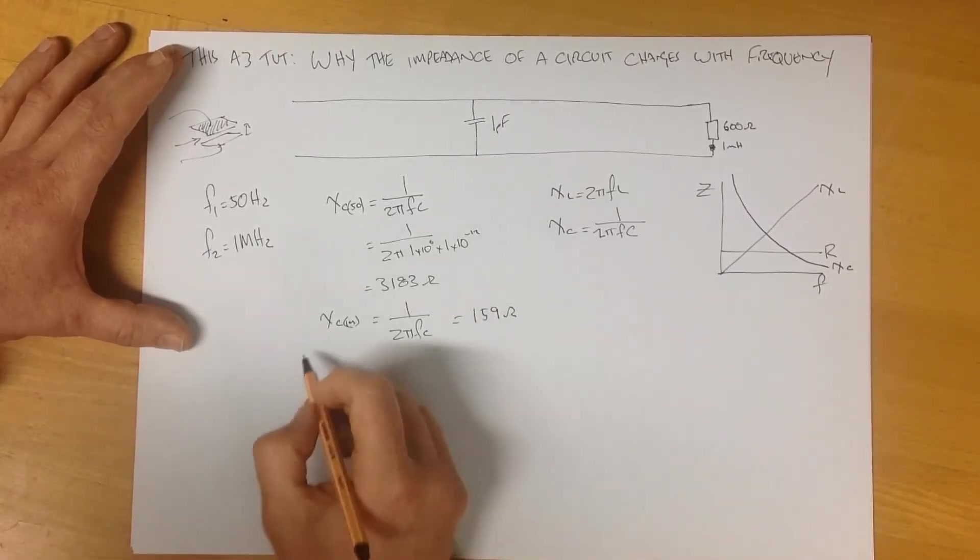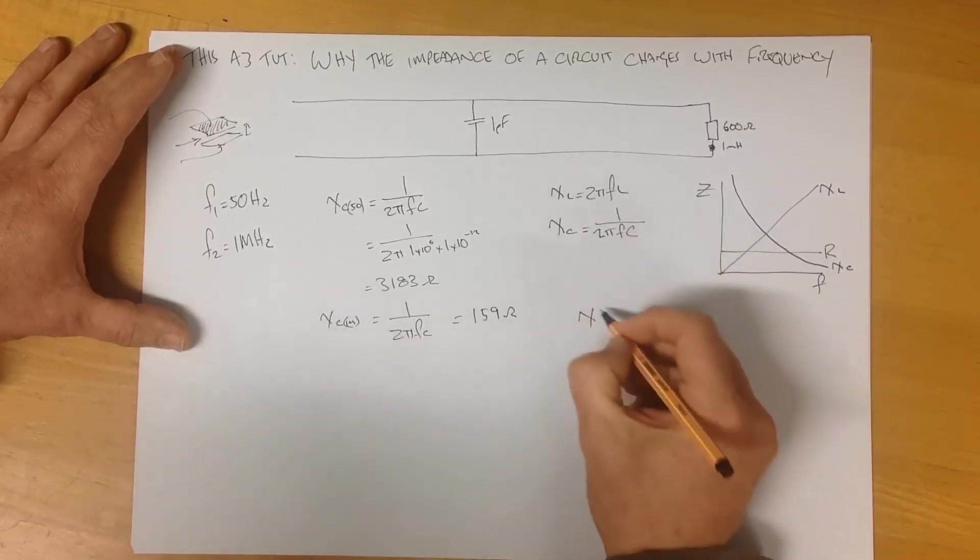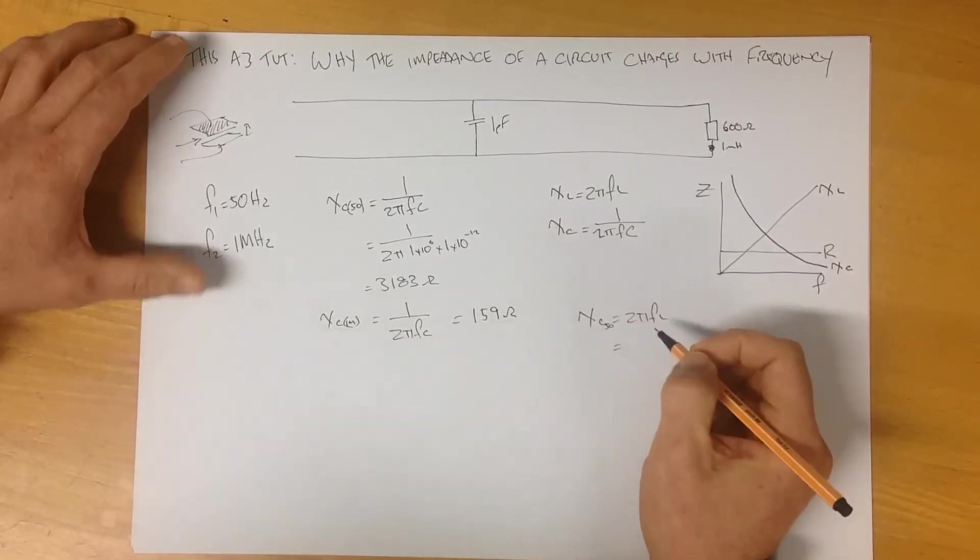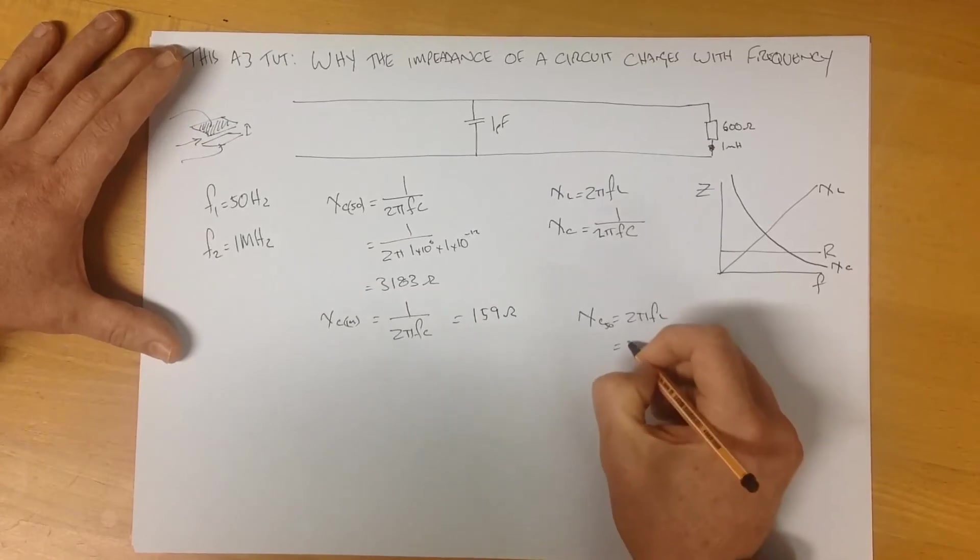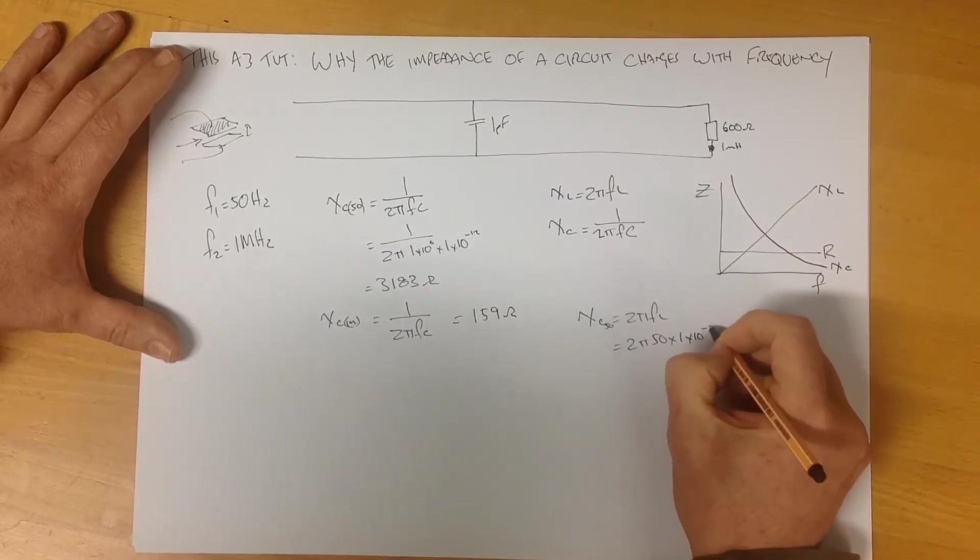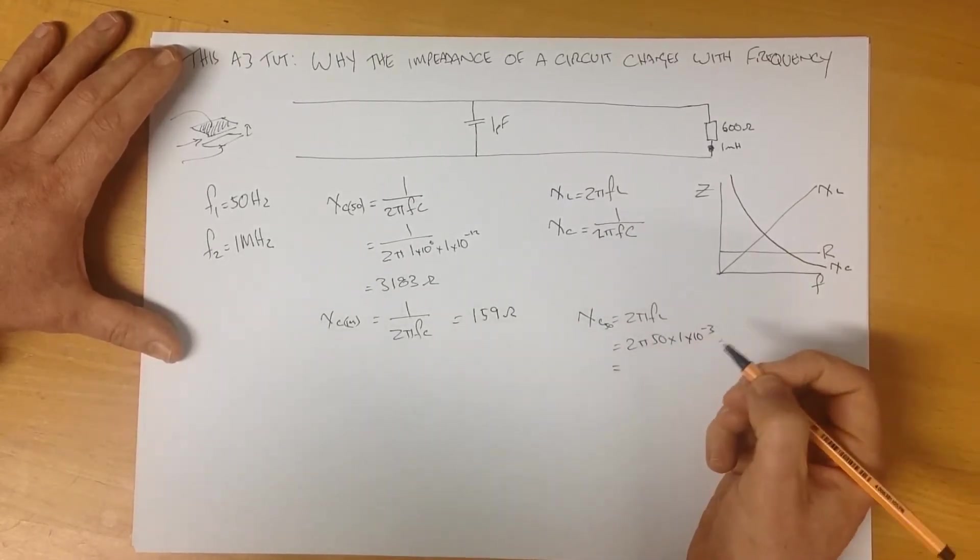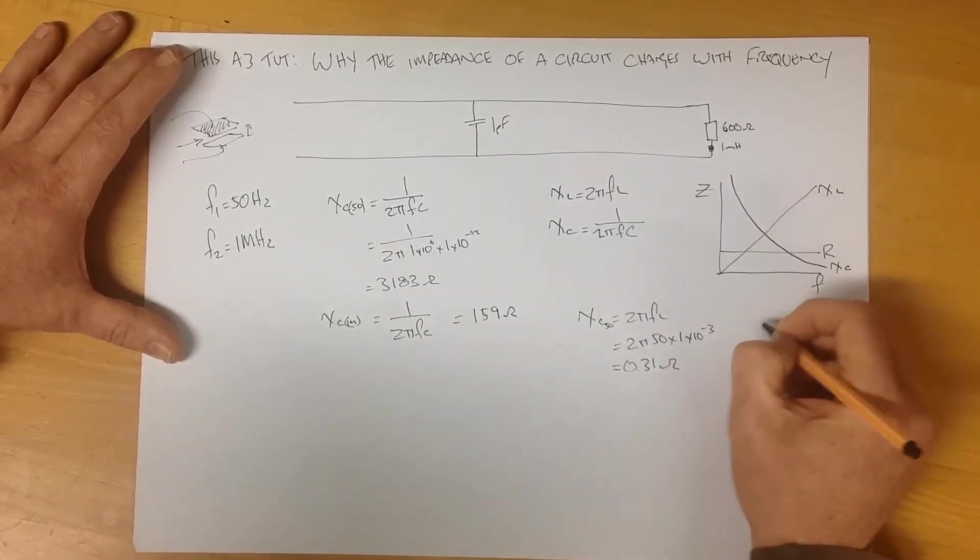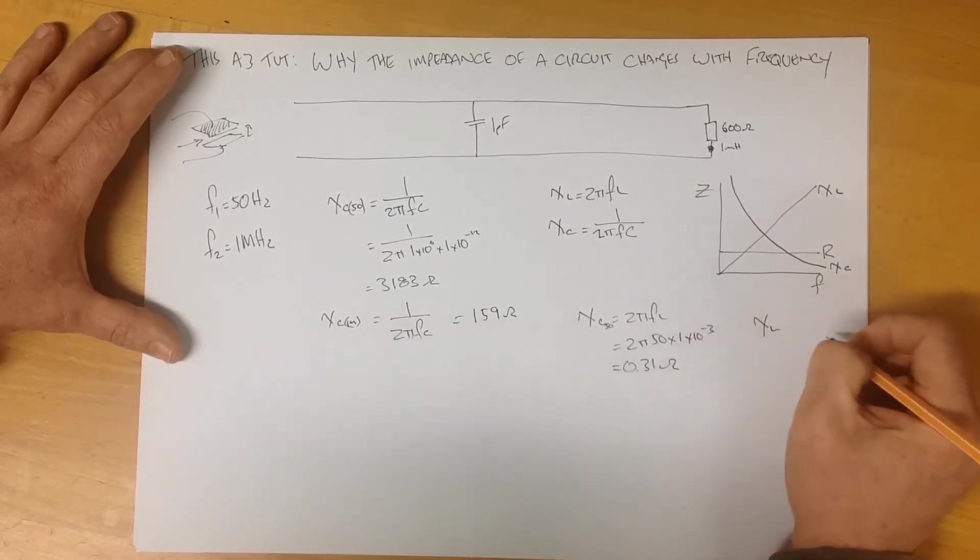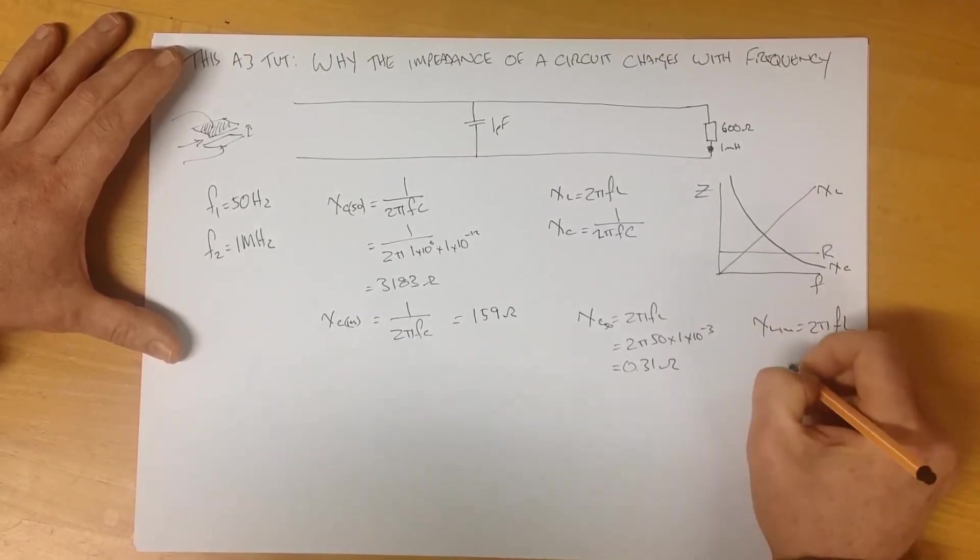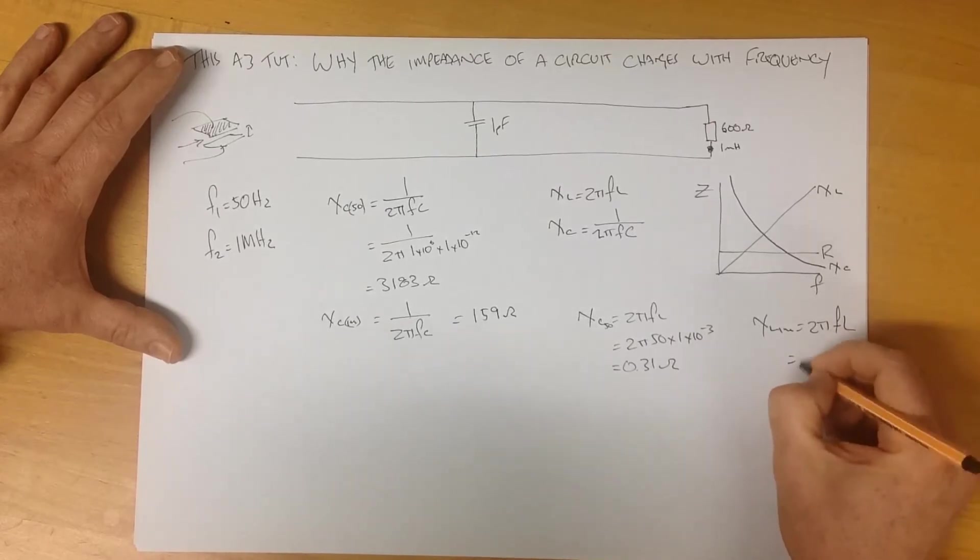If we now look at our inductive reactance at 50 hertz, 2π times 50 times 1 millihenry, it gives us an answer of 0.31 ohms. Our inductive reactance at 1 megahertz, 2πfL, will give us an answer of around about 6,283 ohms.